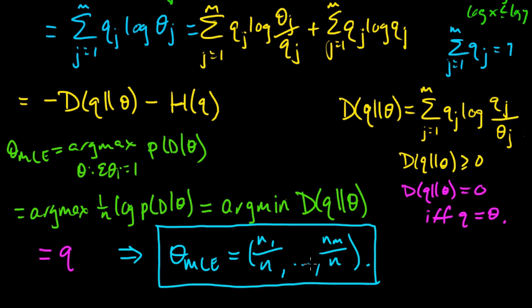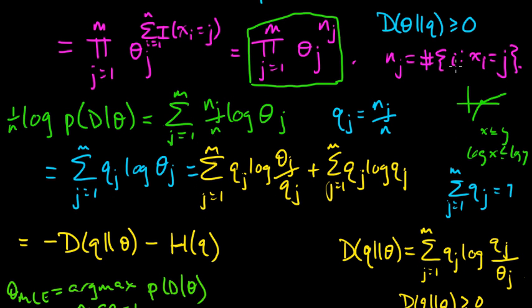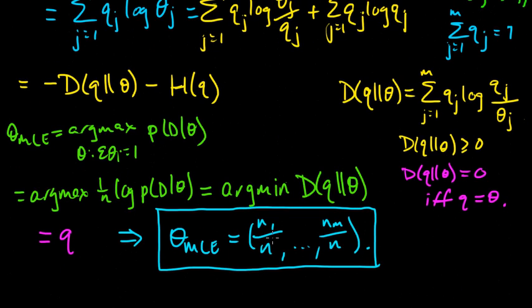And this has a very natural interpretation. Since each of these n_j's here is the number of i's, the number of x_i's that are equal to j, then each of these q_j's here are the empirical fraction of points, the fraction of x's that we get that are equal to j, which we sometimes refer to as the empirical probability that x equals j. So this is just the empirical distribution, the empirical distribution given our data.